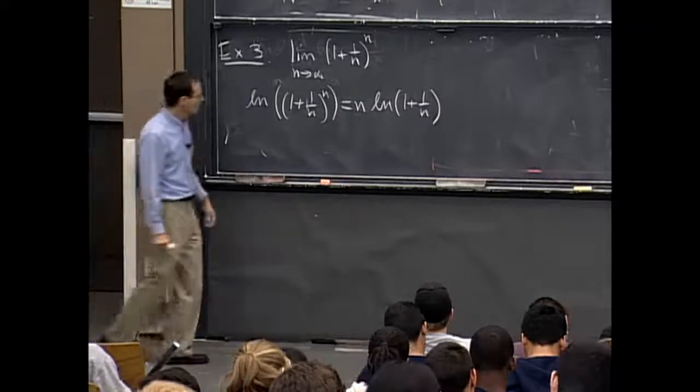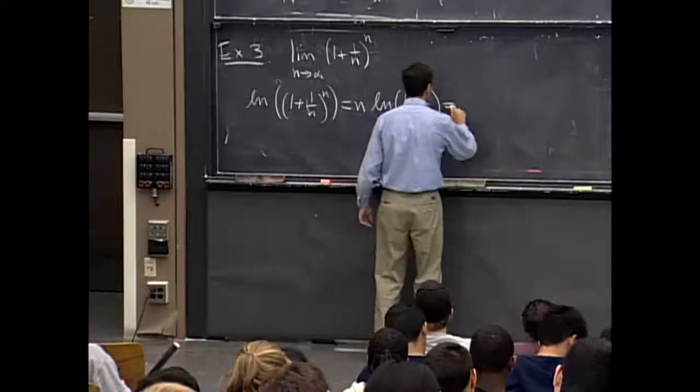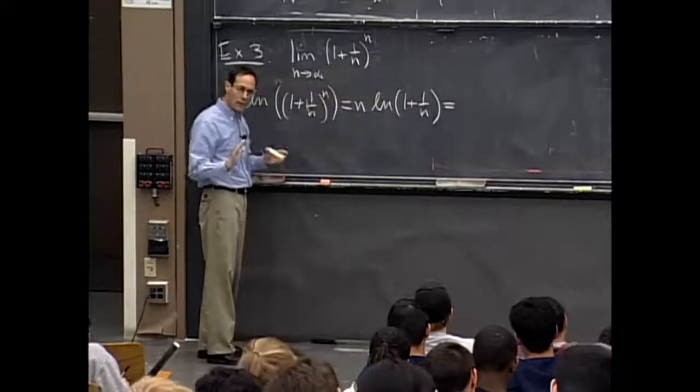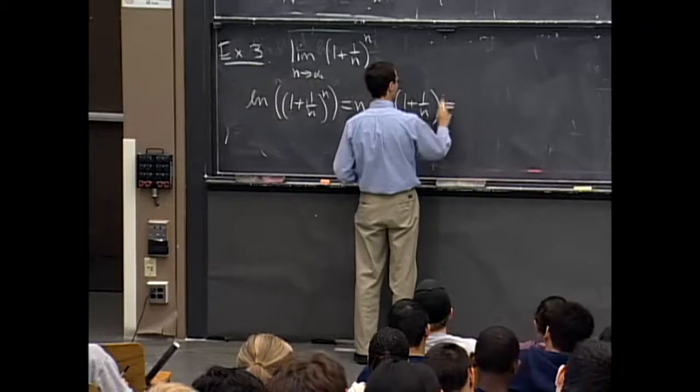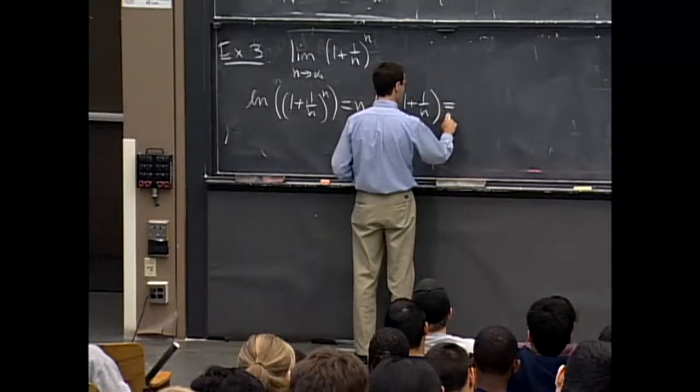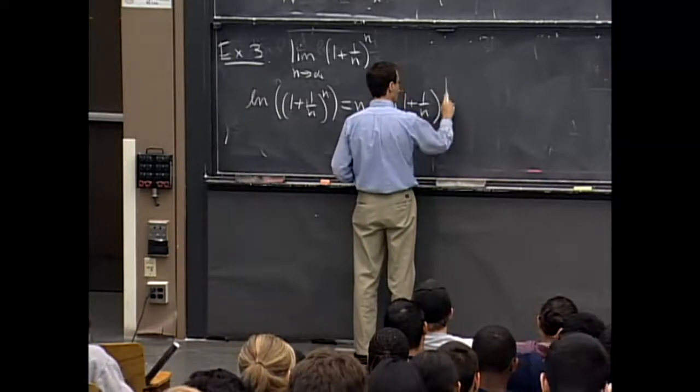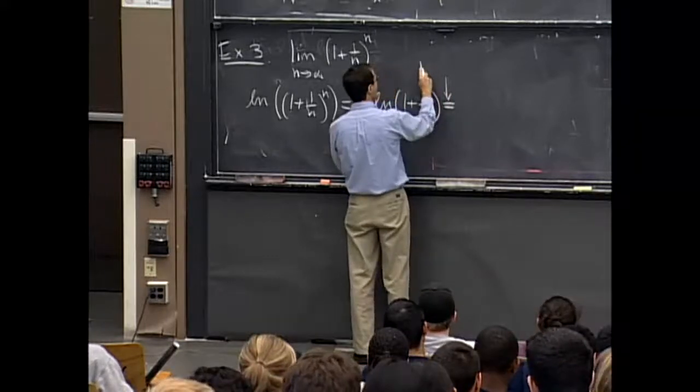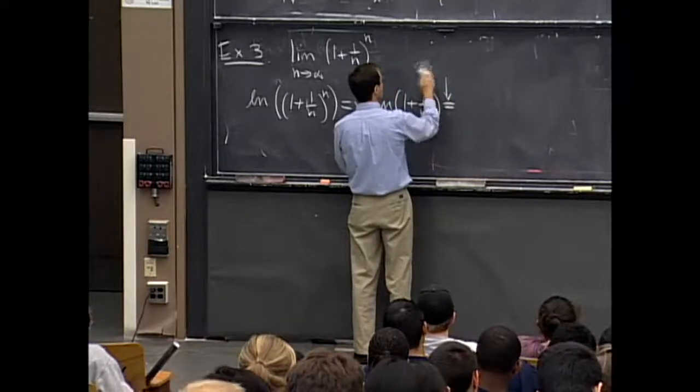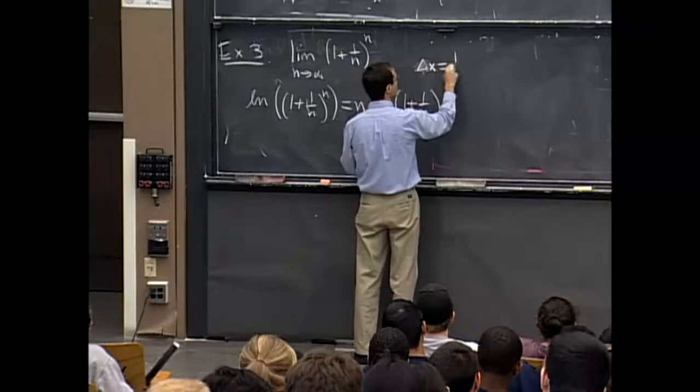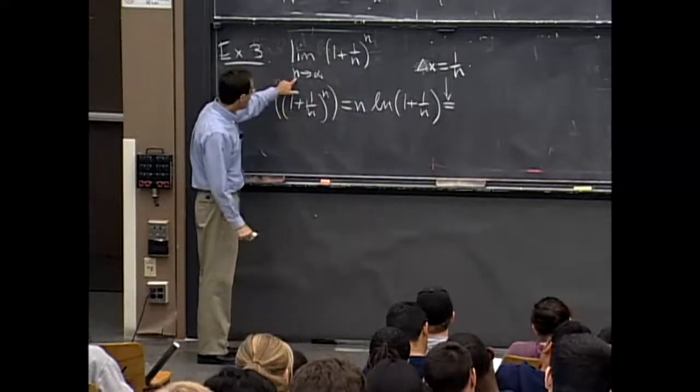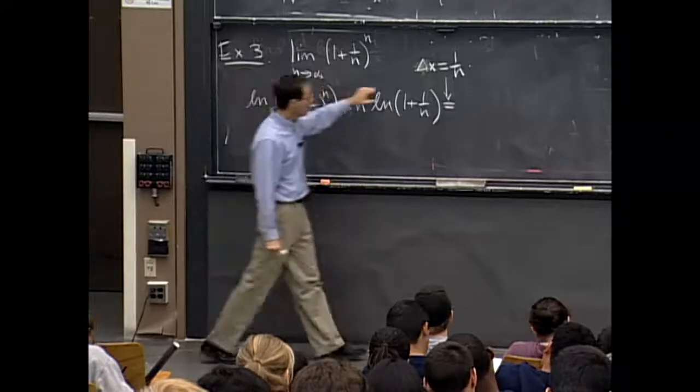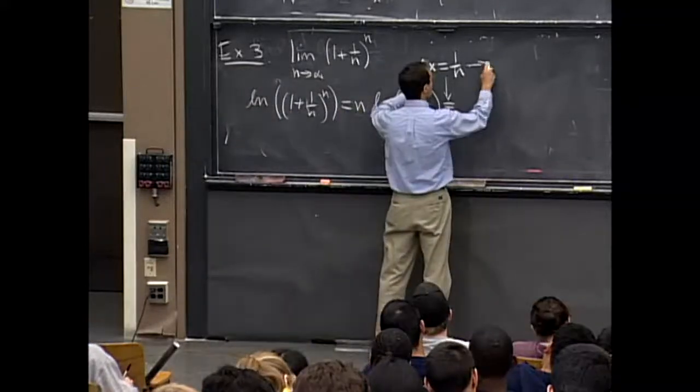And now I'm going to rewrite this in a form which will make it more recognizable. So what I'd like to do is I'm going to write delta x equals 1 over n. So if n is going to infinity, then this delta x is going to be going to 0.